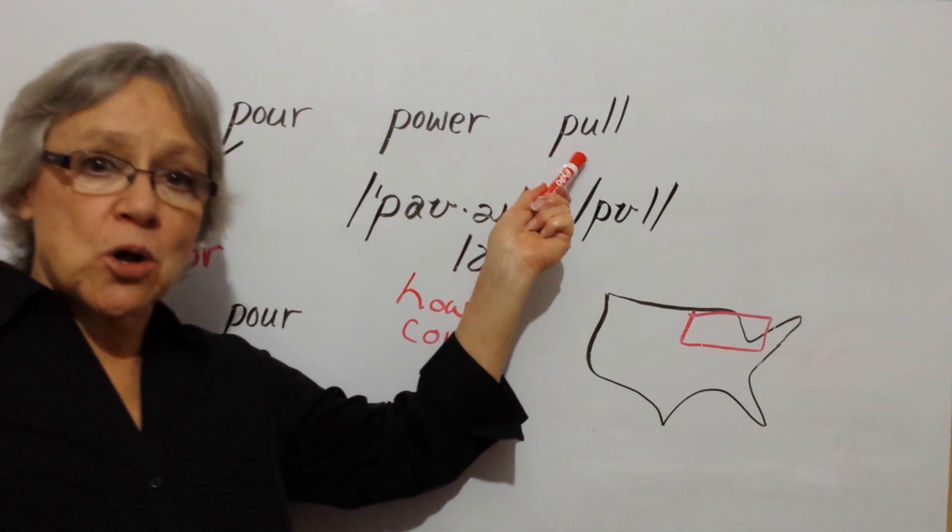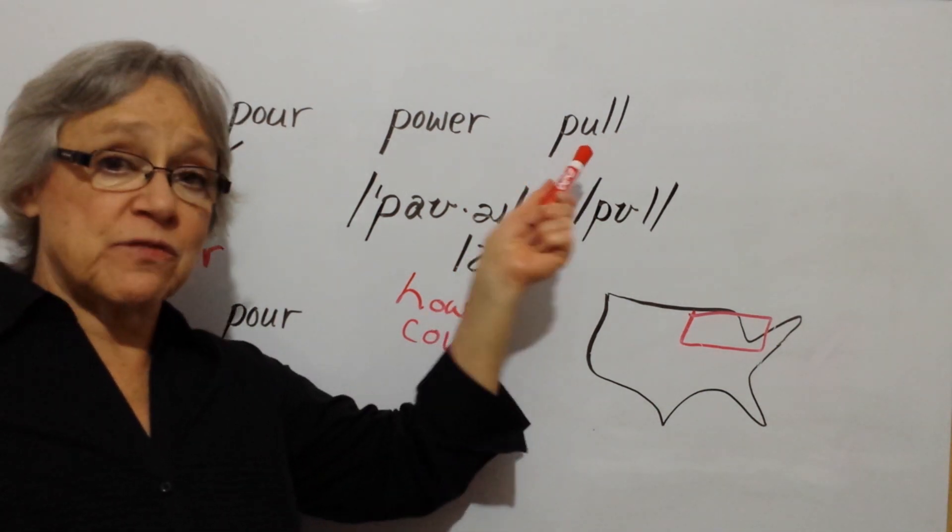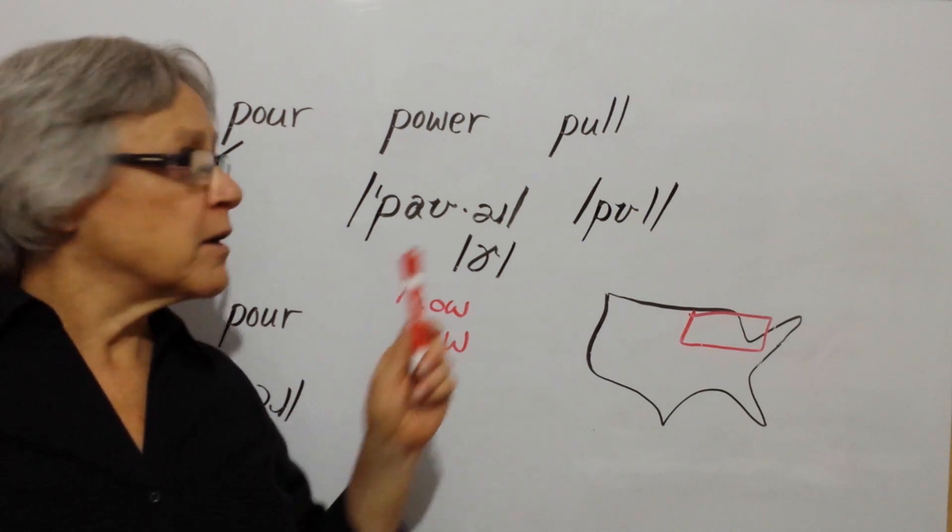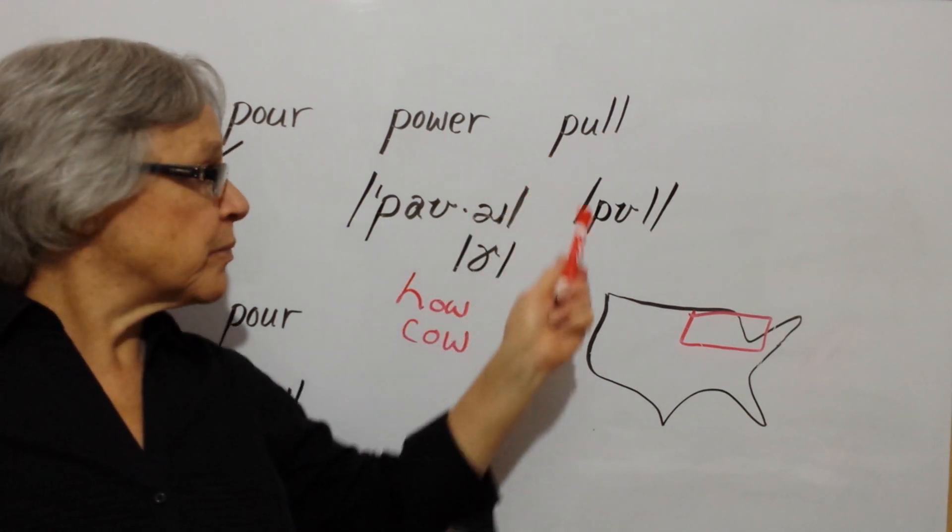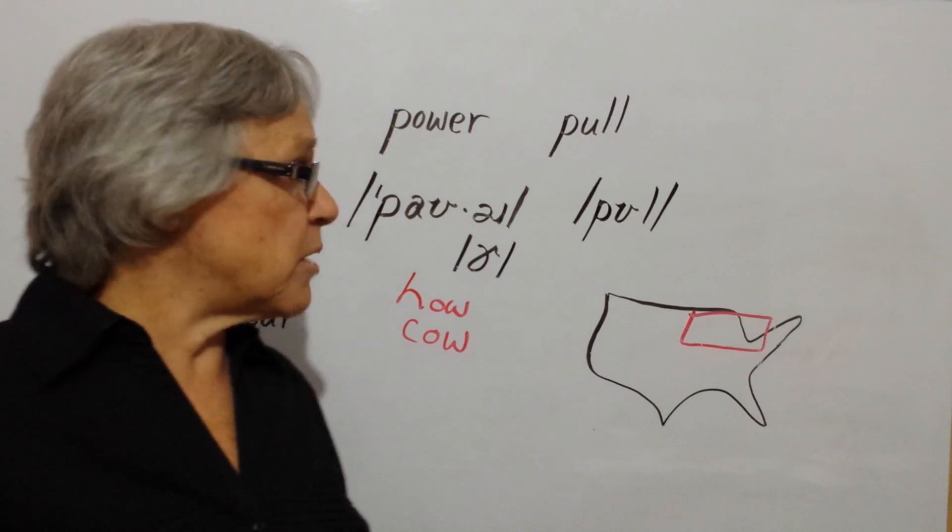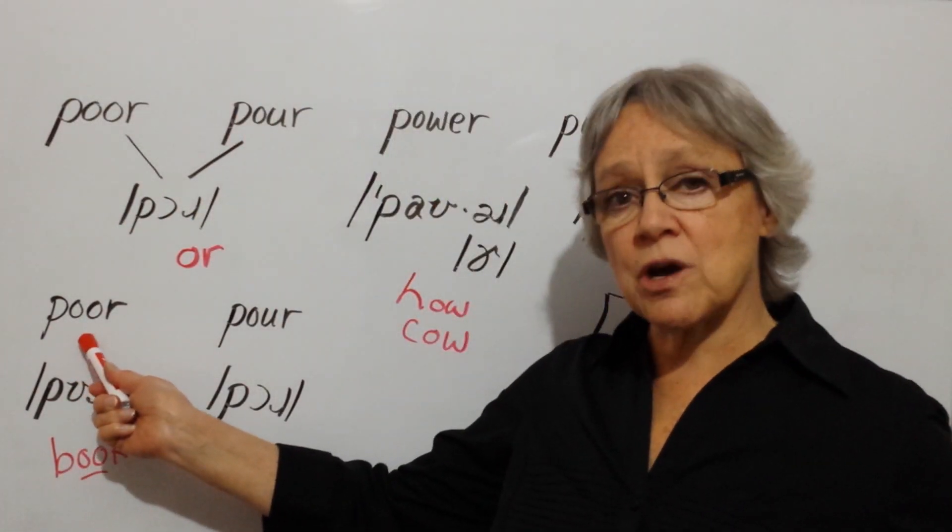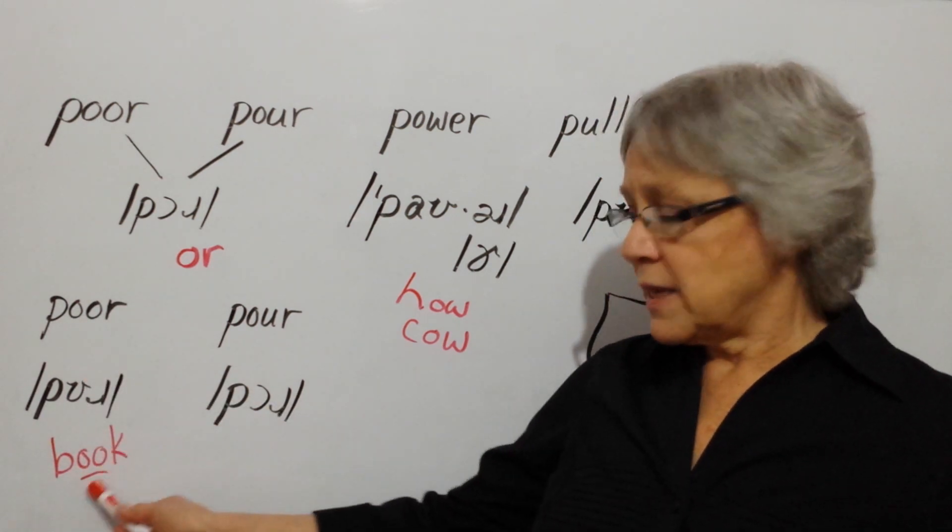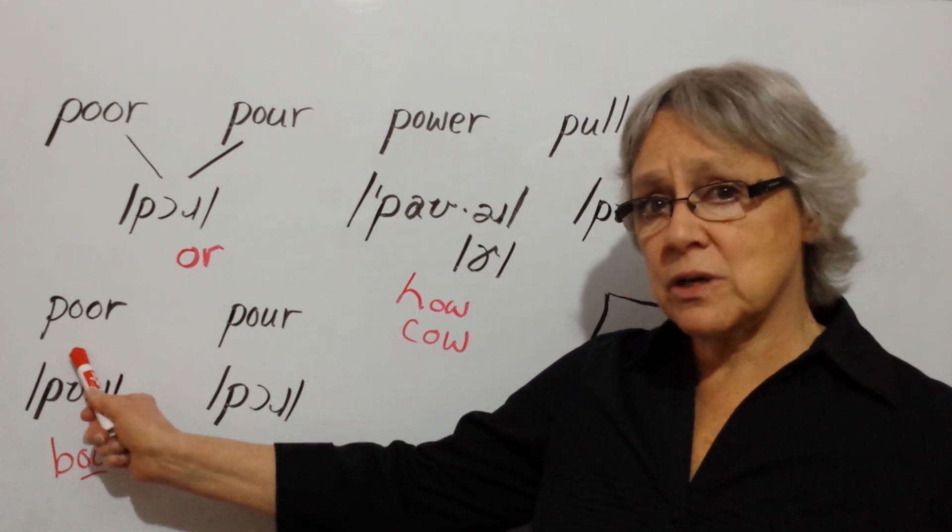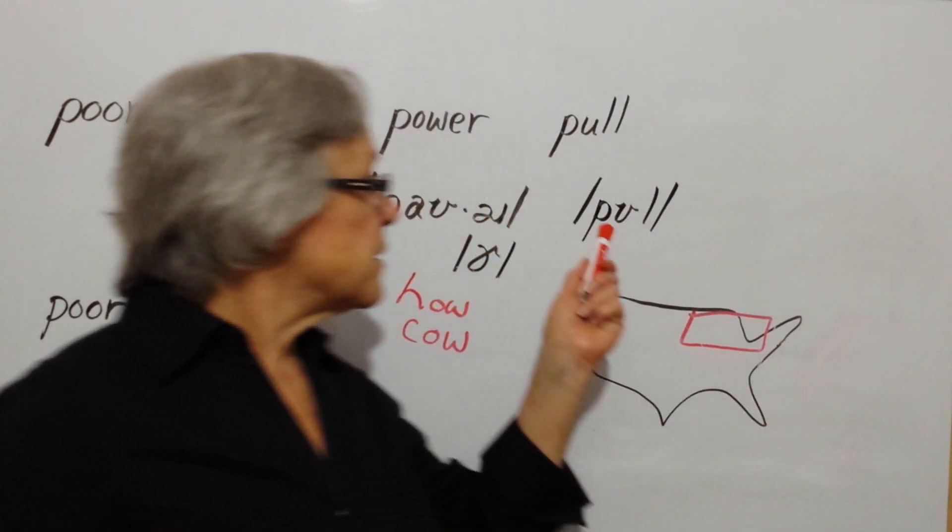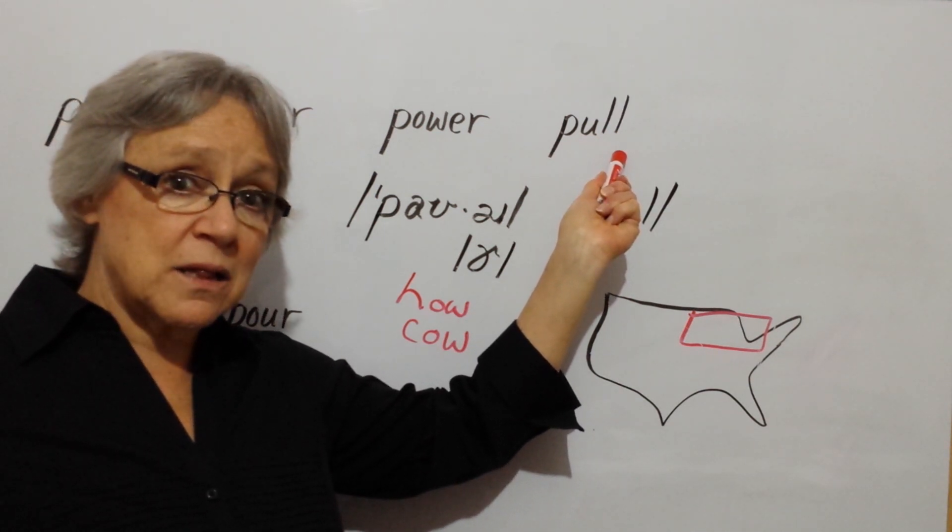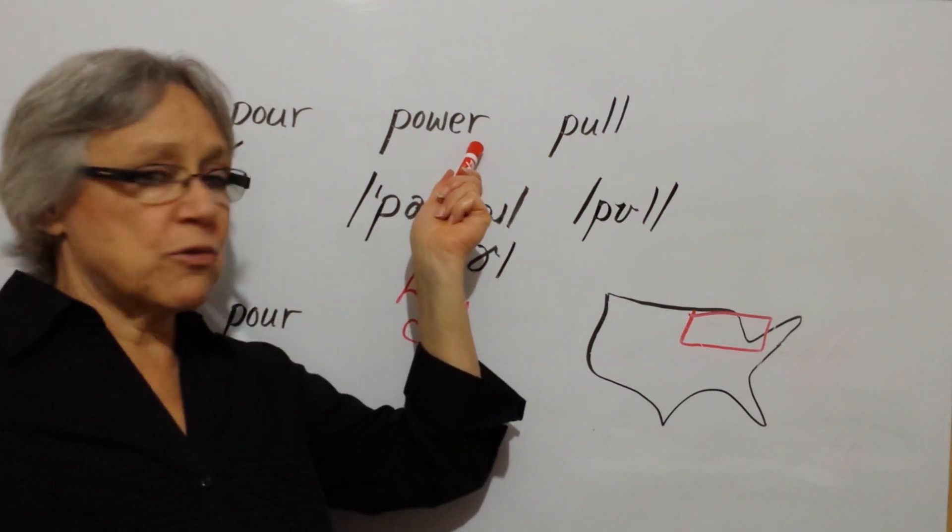And then we have the word pull. To me this word sounds very different than the other ones, but I understand why some people may confuse this word with the others. First of all, it does begin with the letter P, the sound 'puh'. The vowel sound here, 'uh', is also the same sound as in this version of pour or pour. It's the vowel sound as in the book. You can see the symbol I wrote here for the vowel sound is 'uh'. The symbol is the same here.